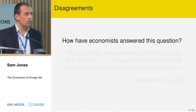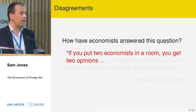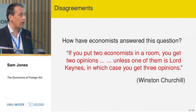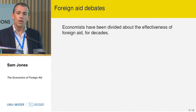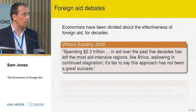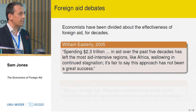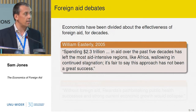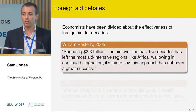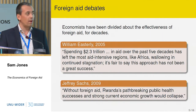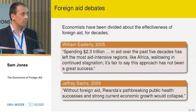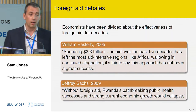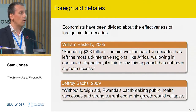There have been a lot of disagreements. To draw on the old adage: if you put two economists in a room, you get two opinions — and particularly with foreign aid, you might even get three. Economists have been divided for generations regarding aid effectiveness. Bill Easterly in 2005 complained that spending 2.3 trillion dollars in aid over the past five decades has left some of the most aid-intensive regions like Africa wallowing in continued stagnation. On the other side, Jeffrey Sachs identified foreign aid as an important factor in the growth of many developing countries, commenting in 2009 that without foreign aid, Rwanda's path-breaking public health successes and strong economic growth would collapse.